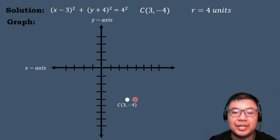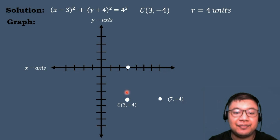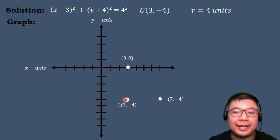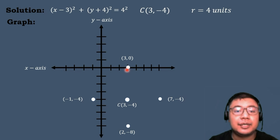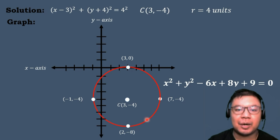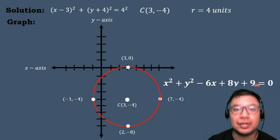Going right 4 units: the coordinates are (7, -4). Going upward 4 units: the coordinates are (3, 0). Going left 4 units: the coordinates are (-1, -4). Going downward 4 units: the coordinates are (3, -8). We then draw a smooth curve connecting the four radius points. Therefore, this is the sketch of the graph of the circle x² + y² - 6x + 8y + 9 = 0.